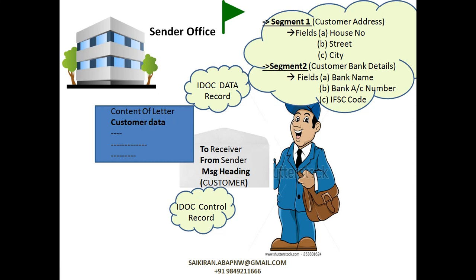So what is the IDOC control record? Whatever you write on the envelope — the to-address, the from-address, and the type of letter — here the type of letter is customer. Everything is held by the IDOC control record. And the postman here is the ALE layer.